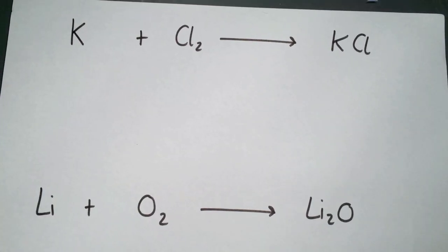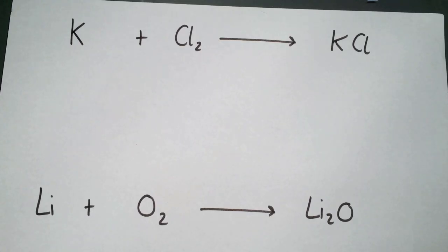In this video we're looking at balancing equations. There are different ways to balance equations. The way I'm going to show you involves writing down the elements that you have, first looking at metals, then looking at non-metals in the main groups like the halogens, and then finally balancing off oxygens and hydrogens.